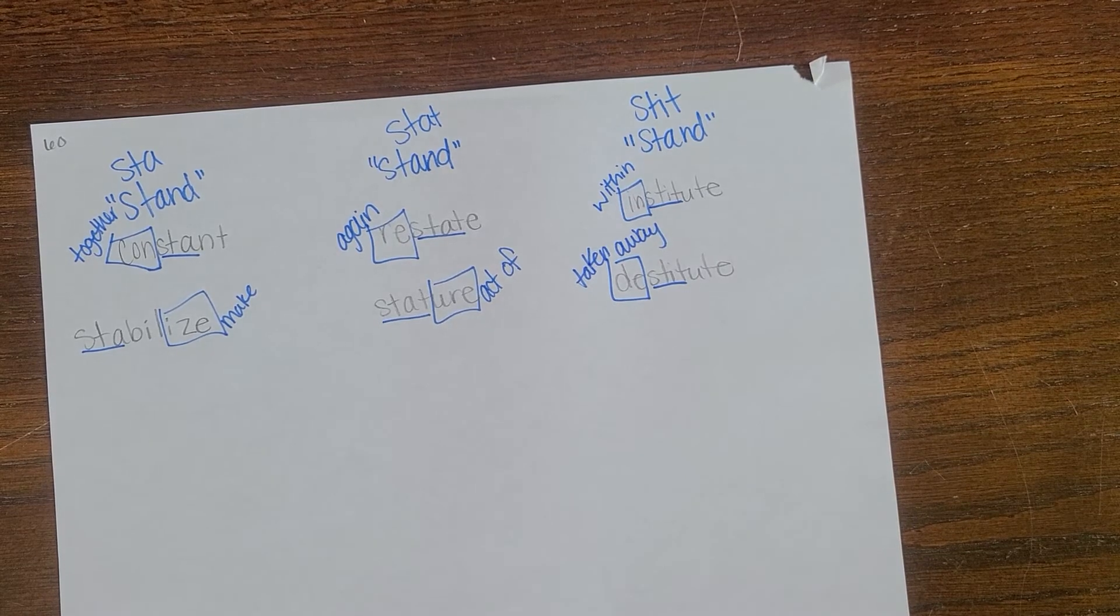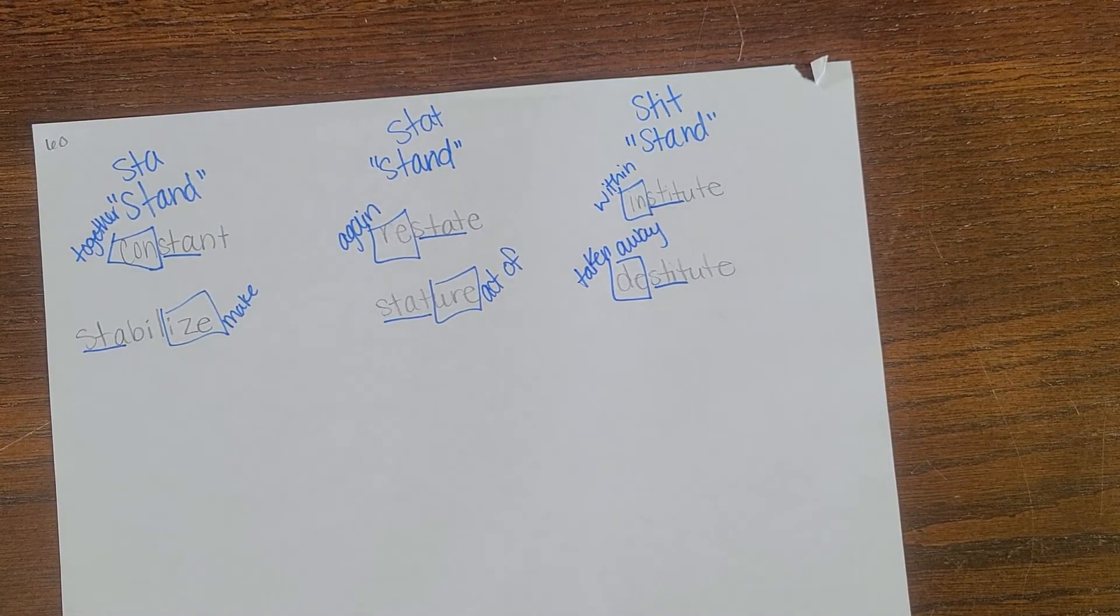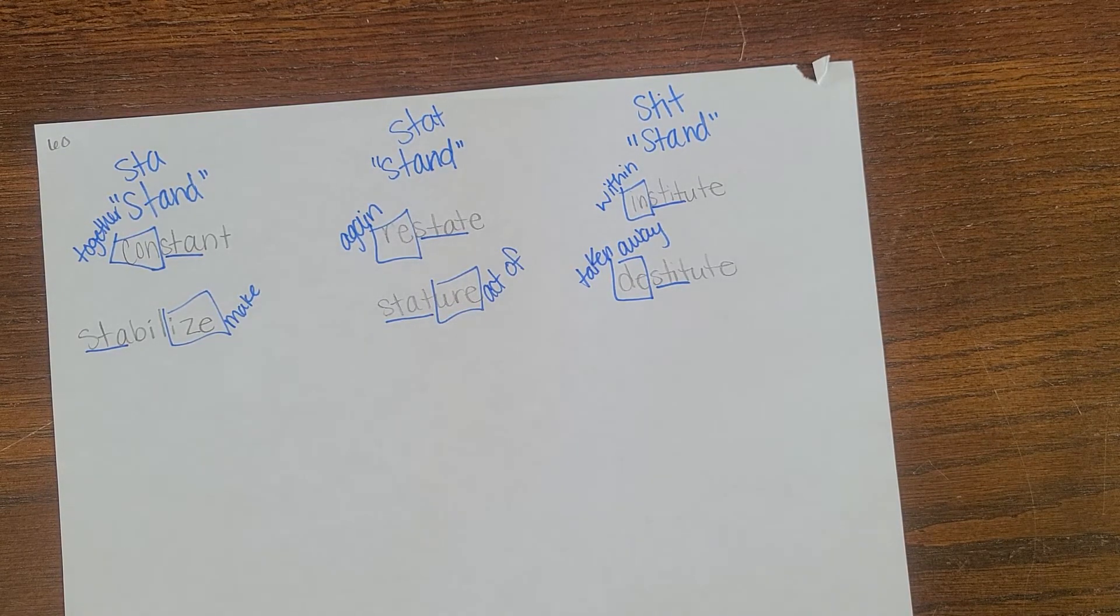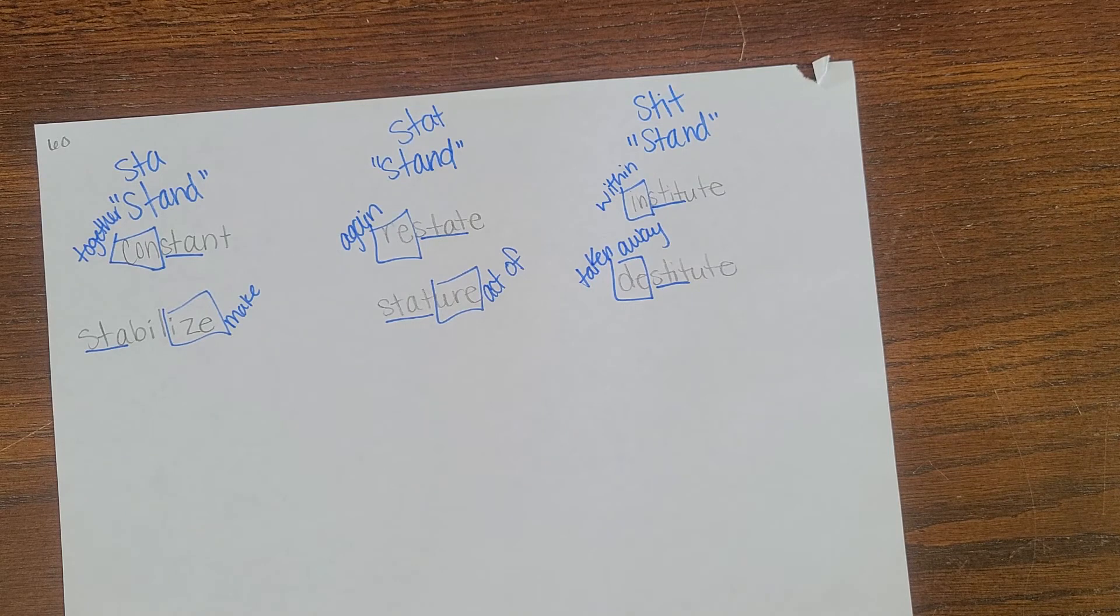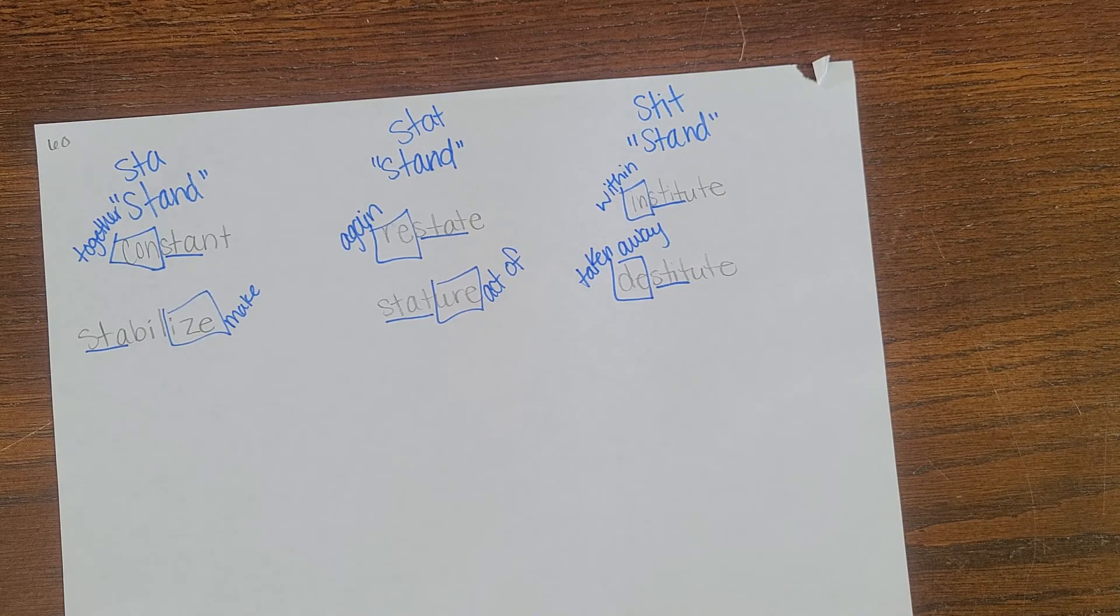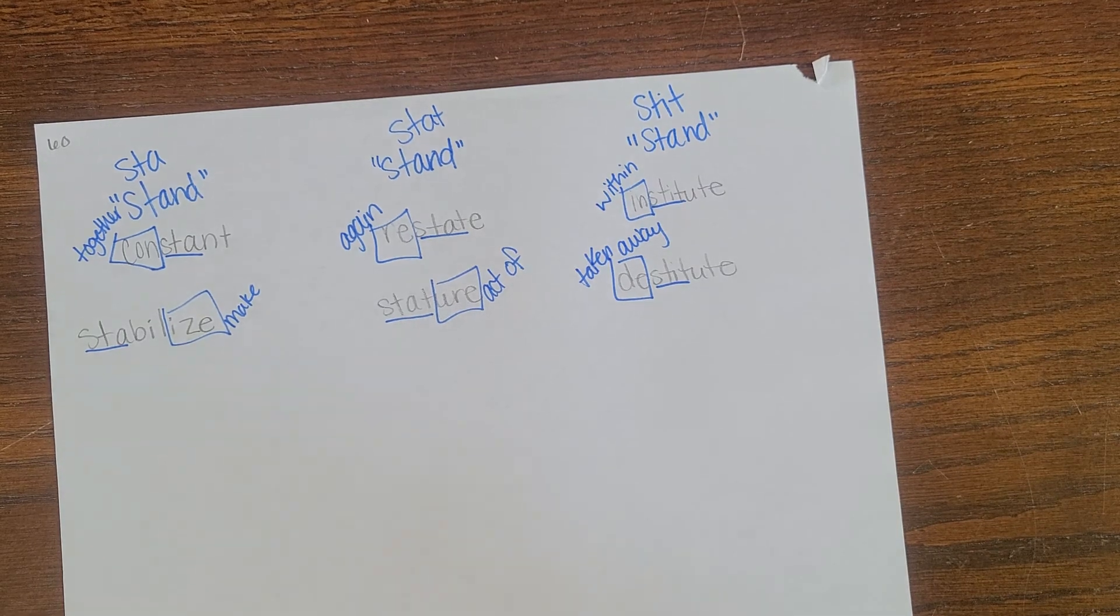You are going to sort words based on word roots and write them on a three-way sort. You are going to highlight the word root in each word, and then you're going to read columns of words and potentially discuss word meanings. So, good luck with that.